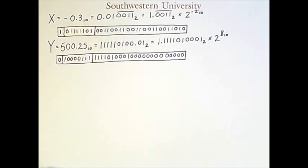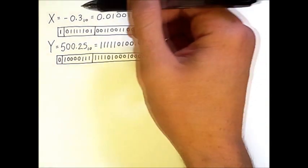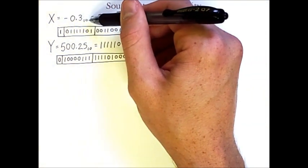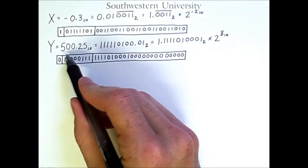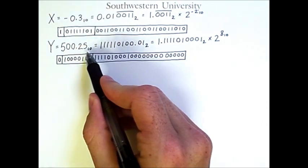Let's work an example of floating point multiplication. We'll be multiplying these two numbers: negative 0.3 in decimal by 500.25 in decimal.